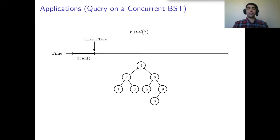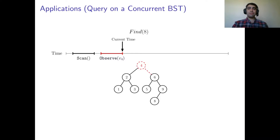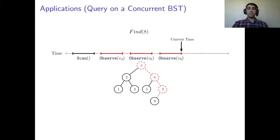Now I am going to talk about two applications of the adaptive partial snapshot type. The first application is performing query operations on a concurrent binary search tree. Consider a process that wants to perform a find(8) operation in the concurrent binary search tree below. First, this process performs a scan operation to obtain a consistent view of the tree. Next, it uses an observe operation to see the value of the root, which in this case is 4. Since the process looks for 8, it chooses the right child to continue. Then it reads the value of the right child and sees that it is 6, and decides to continue by going right again. This process continues to observe the values of the nodes one by one adaptively until the find(8) operation finishes. It is clear that an adaptive partial snapshot object allows this process to only read a path instead of the entire tree.